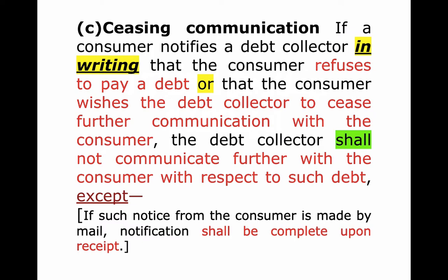There are two things you can say, and there's no magic language required. You don't have to use some formulaic recitation of words. You just have to tell the debt collector that you refuse to pay the debt — that is a cease communication letter. Or you can say you wish the debt collector to cease further communication. Examples that qualify: 'I refuse to pay this debt,' 'I'll never pay this debt to you,' 'cease and desist communication,' 'I don't ever want to hear from you again,' or 'never contact me again.' You just let the debt collector know either you're never going to pay, or whether you'll pay or not, you don't ever want to be contacted again.